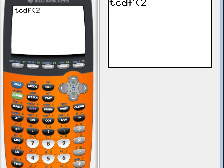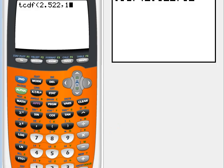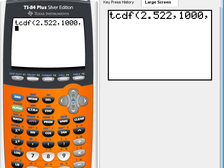And then our right endpoint, we'll go ahead and put in 1,000, then another comma, and then our degrees of freedom, and that is 27. Close the parentheses. Now if we hit enter, we get the output.